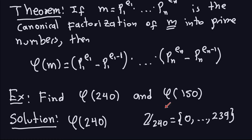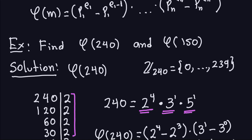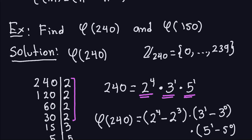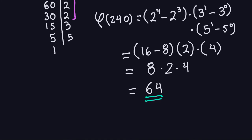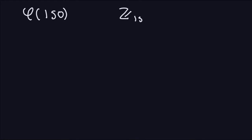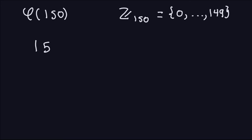Now we can go ahead and do phi of 150, doing exactly the same thing. We need the canonical factorization of 150 and then apply the theorem. So we want to compute phi of 150, which means we're looking at the set Z of 150 — all elements from 0 to 149 — and counting how many are relatively prime with 150. We're going to apply the theorem, so let's start with the factorization of 150.